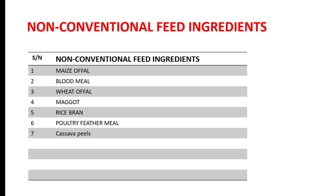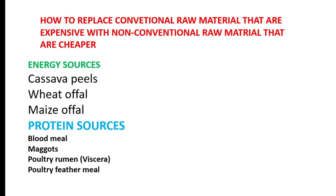Among the non-conventional ingredients we have maize offal, which is the effluent of maize; blood meal; wheat offal, which is very important; maggot; rice bran; poultry feather meal; and cassava peels, among others. People are now into the production of maggots, and I have explained step by step in our blueprint how to produce odorless maggots of very good quality for use during feed formulation.